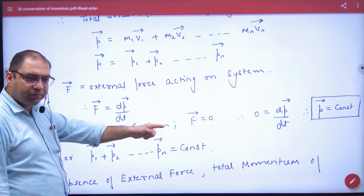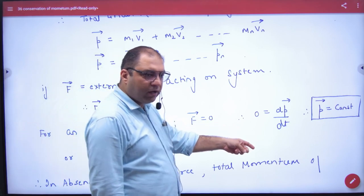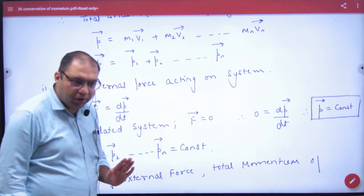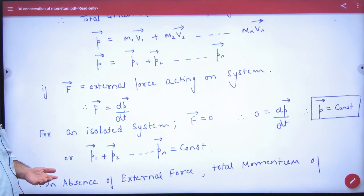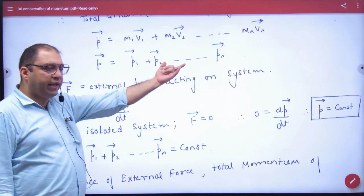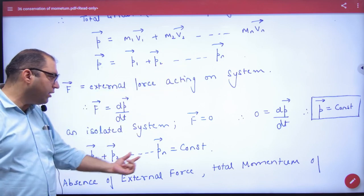If F's value is zero, so zero is dp by dt. So p's value is constant. So the whole system's momentum is constant. But the whole system's momentum is constant. What is p1 vector, p2 vector up to pn vector is constant.